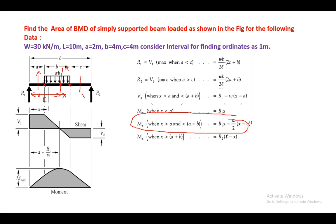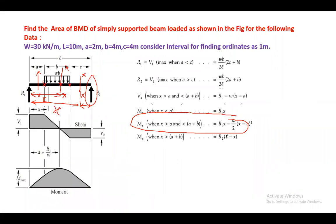For the third section, the moment at X can be obtained directly from the right-hand side by considering R2. So M(X) = R2 × (L − X), where L − X is the distance from the section to the right support. These are the three M(X) equations for the bending moment.